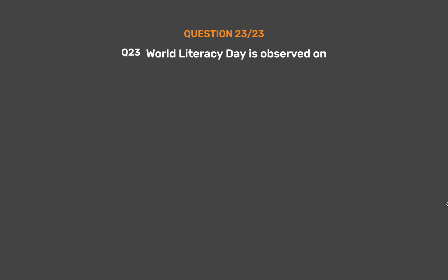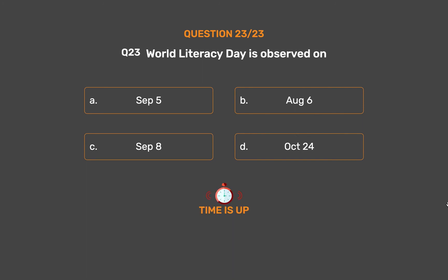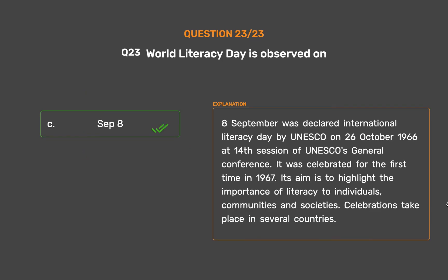Question No. 23. World Literacy Day is observed on: Option A, September 5; Option B, August 6; Option C, September 8; Option D, October 24. The correct answer is Option C, September 8. The 8th of September was declared International Literacy Day by UNESCO on 26 October 1966 at the 14th session of UNESCO's General Conference. It was celebrated for the first time in 1967. Its aim is to highlight the importance of literacy to individuals, communities and societies.